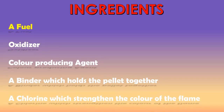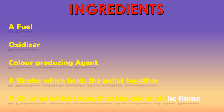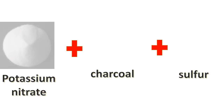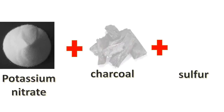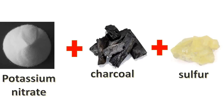Here are the ingredients of firecrackers: a fuel, oxidizer, color-producing agent, a binder which holds the pellets together, and chlorine. And here are the ingredients of gunpowder: potassium nitrate, charcoal, and sulfur.